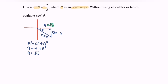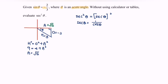The question asks us to find sec² θ, meaning sec θ, bracket squared. Based on the trigonometric ratio, sec θ equals 1 over cos θ. For cos θ, based on the trigonometric ratio, it will be adjacent over hypotenuse, so cos θ equals square root of 5 over 3.